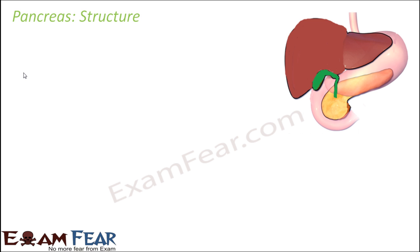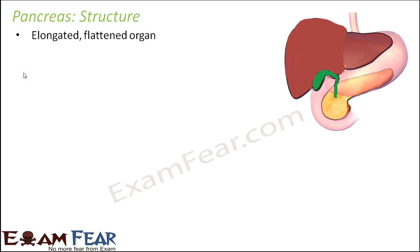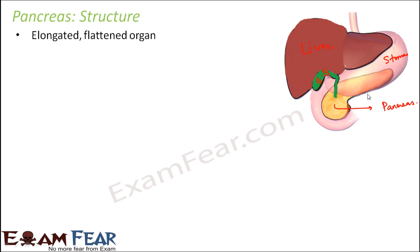Now we will talk about the next structure, which is the pancreas. The pancreas is an elongated flattened organ. Here in this picture you can see the liver, just below it is the gallbladder — that green colored structure — and the pink structure is the stomach.